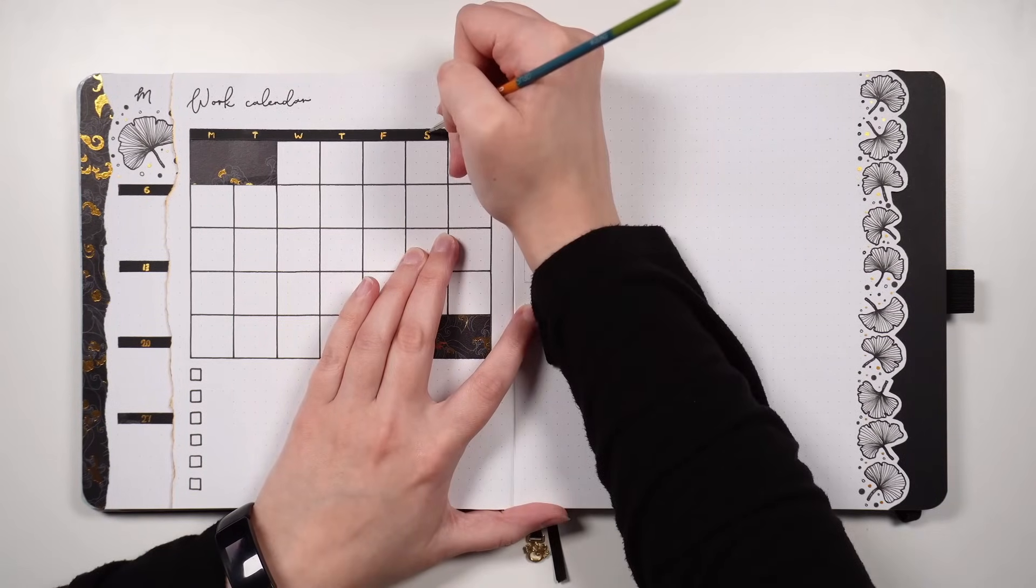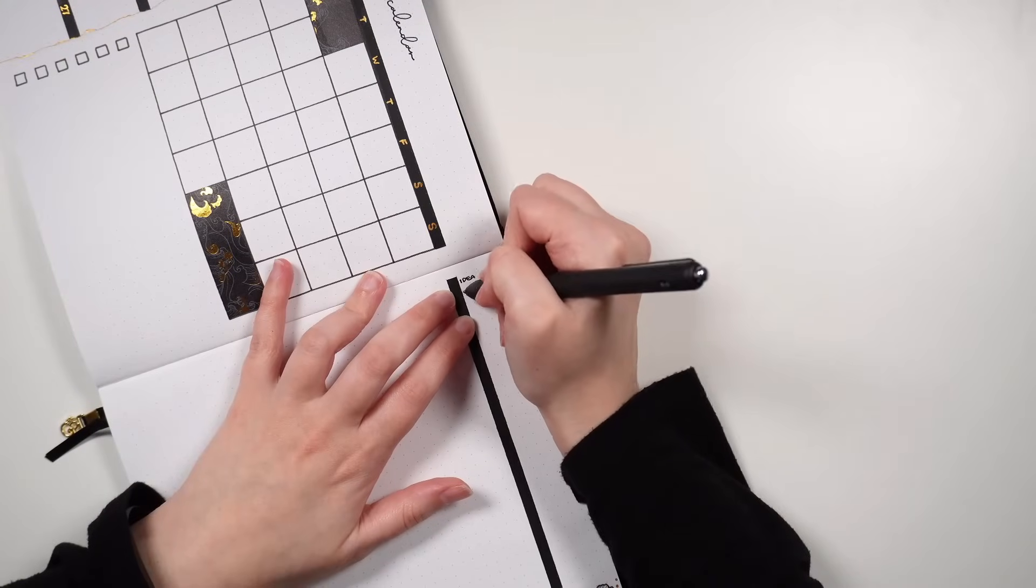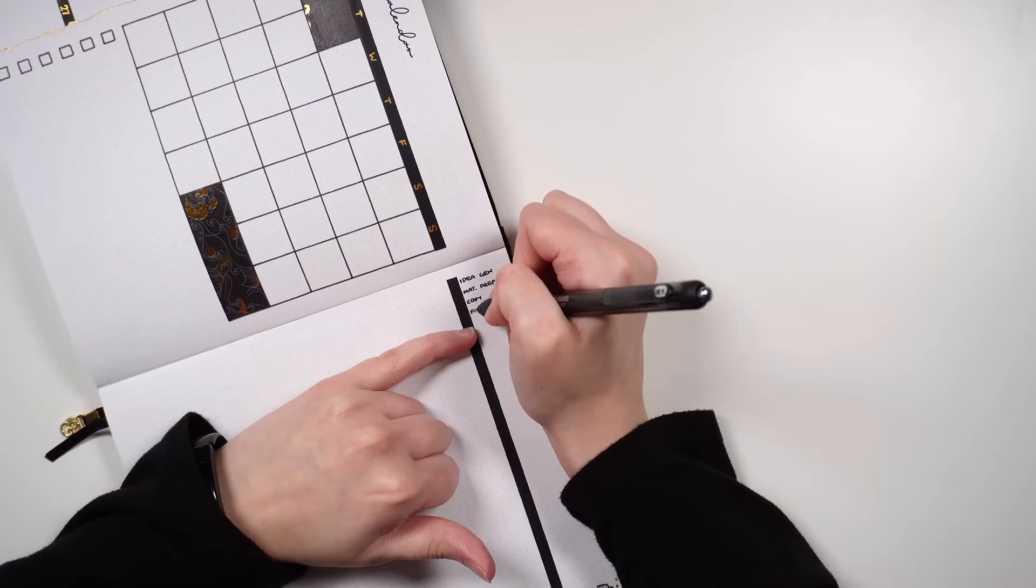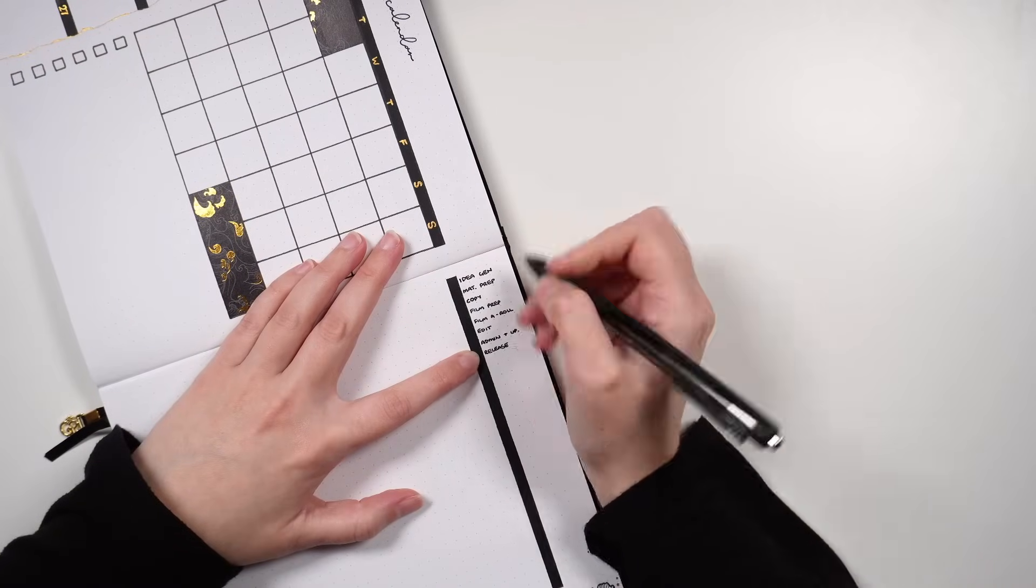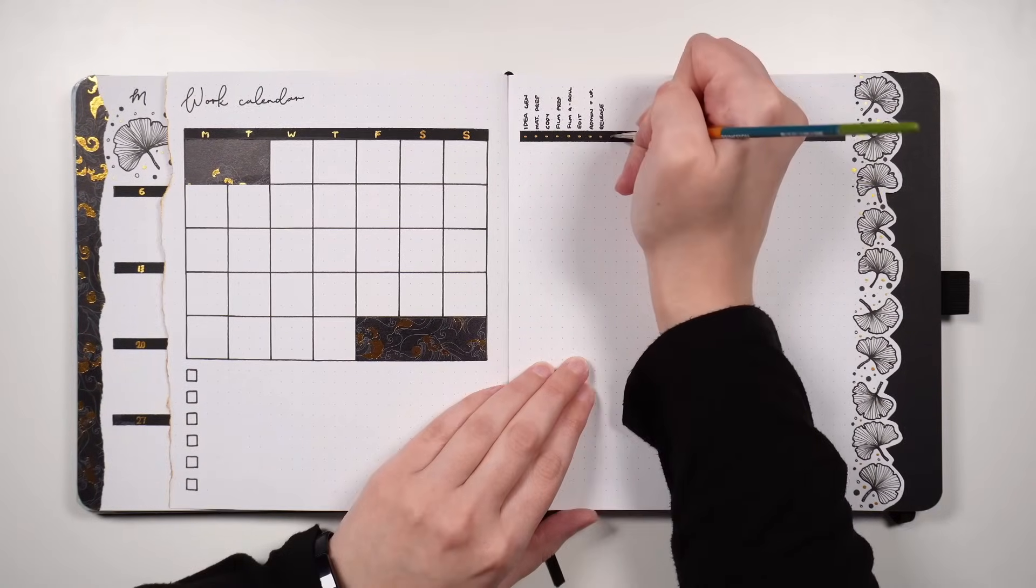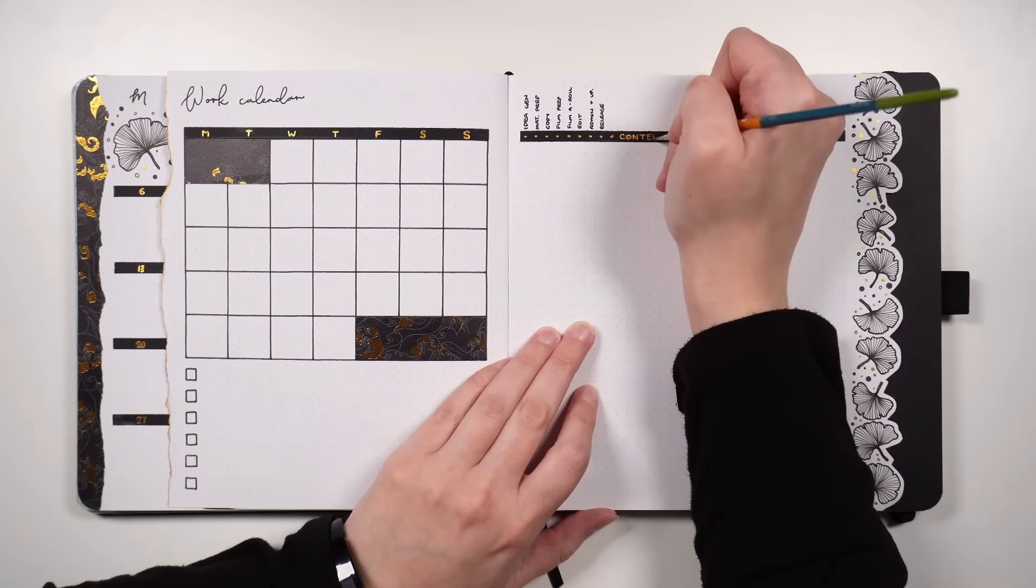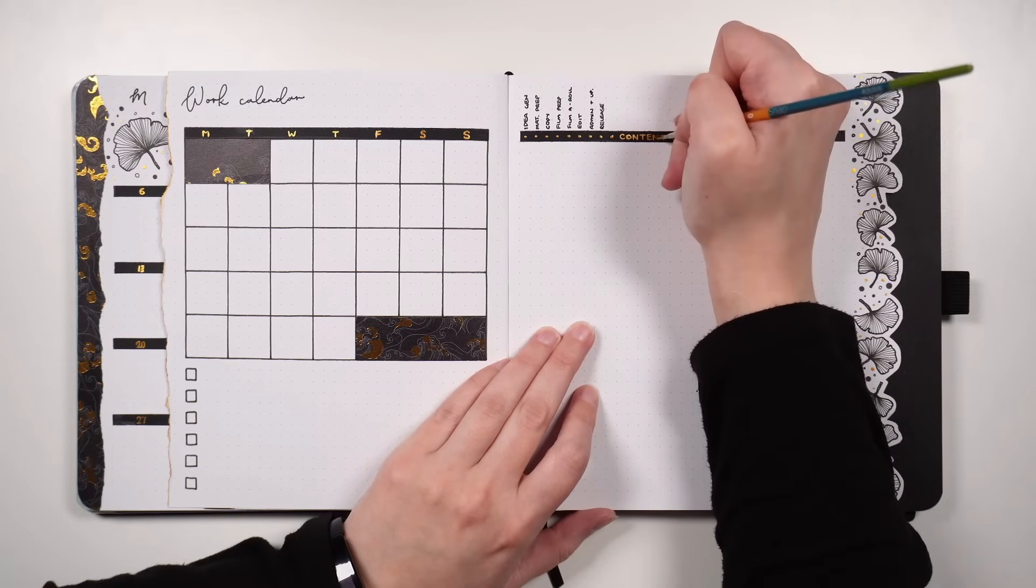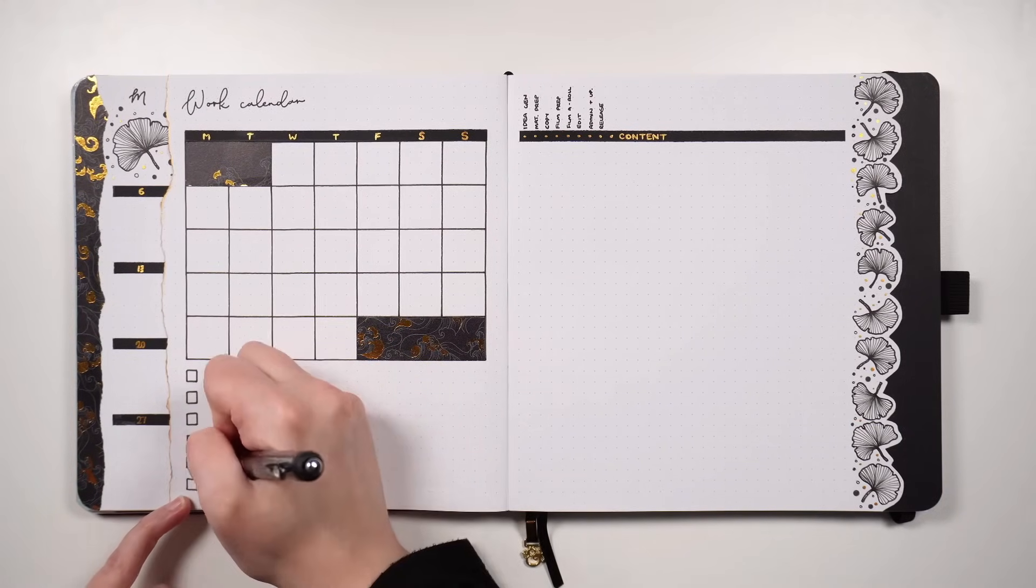this one is going to be set up using the Alastair method. So columns going down the left hand side, which relate to all of the different steps in working on a piece of content, and then the larger section on the right is where I can write in what those content pieces are. My plan is to separate this into my YouTube content at the start, and then my team member perks after this, and then any other content goes at the bottom. I'm hoping that this style ends up working better for me compared to what I had in October.